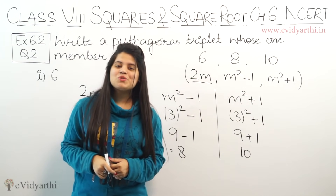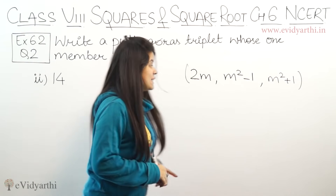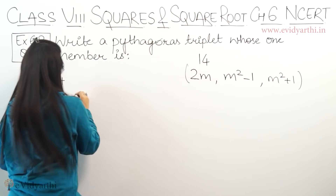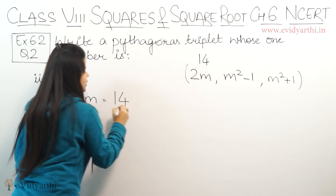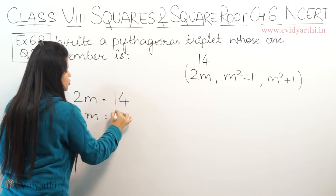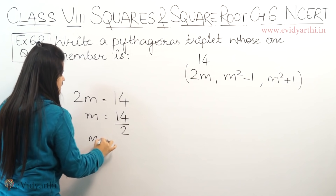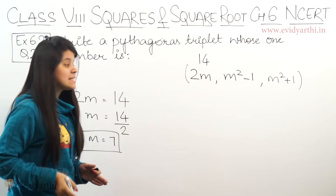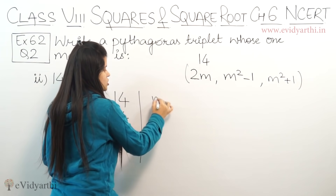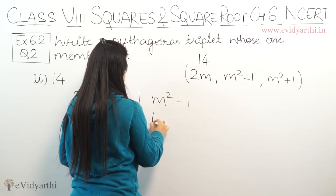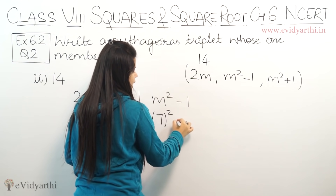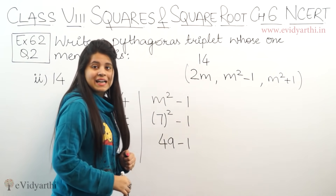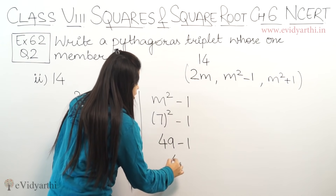This was the first part. Now let's come to the next part. The second part is 14. So let's take it as the first number. So 2m equals 14, which means m equals 14 upon 2, so m equals 7. Now let's put it in the next number which is m² - 1. So 7² - 1, and 7² is 49 minus 1.